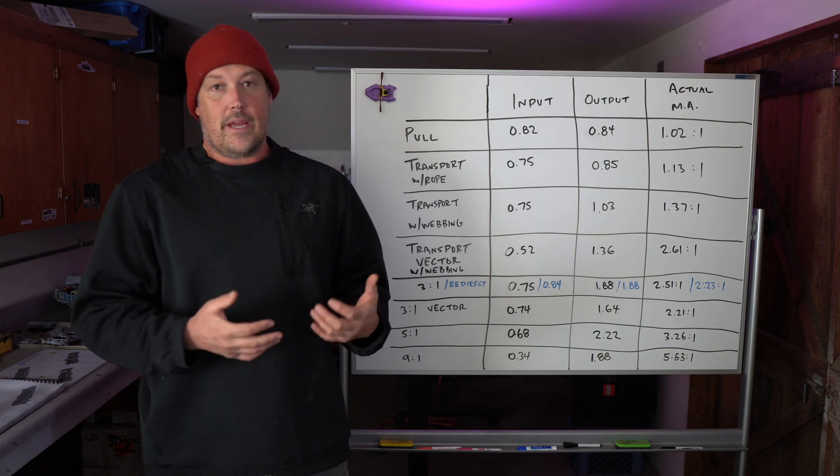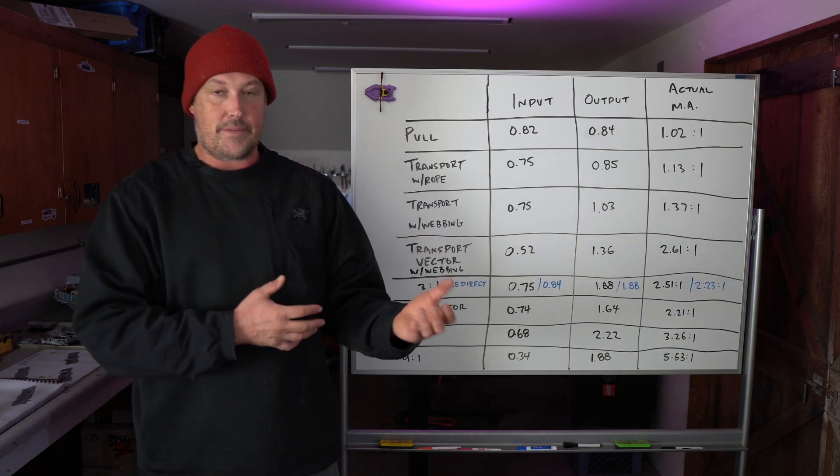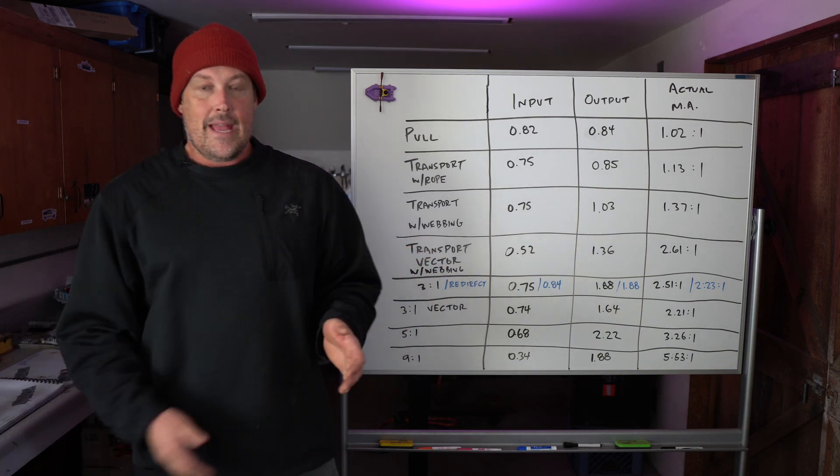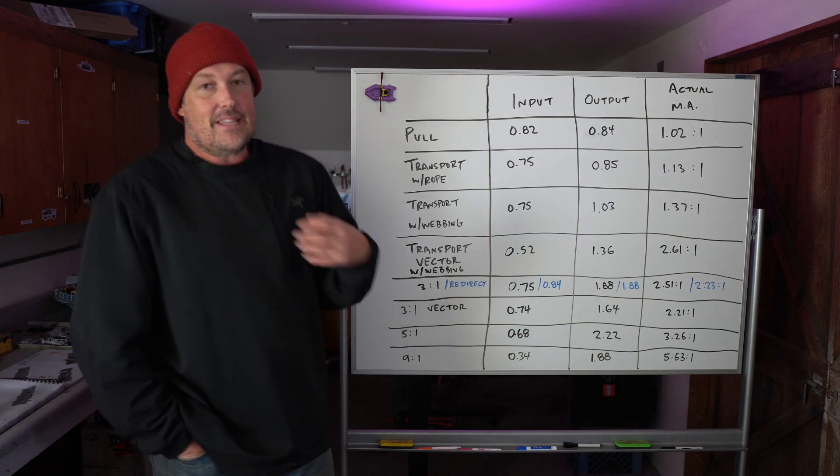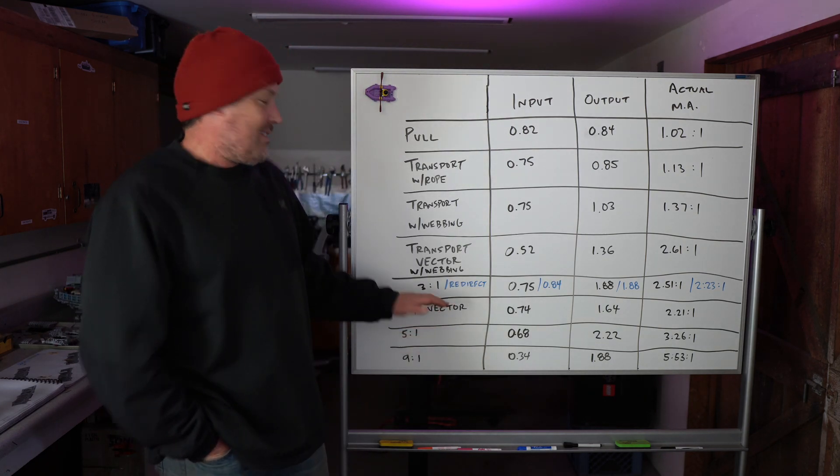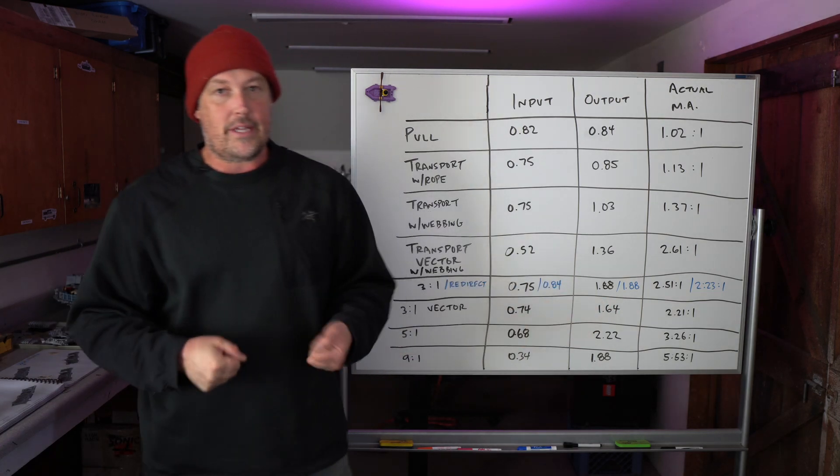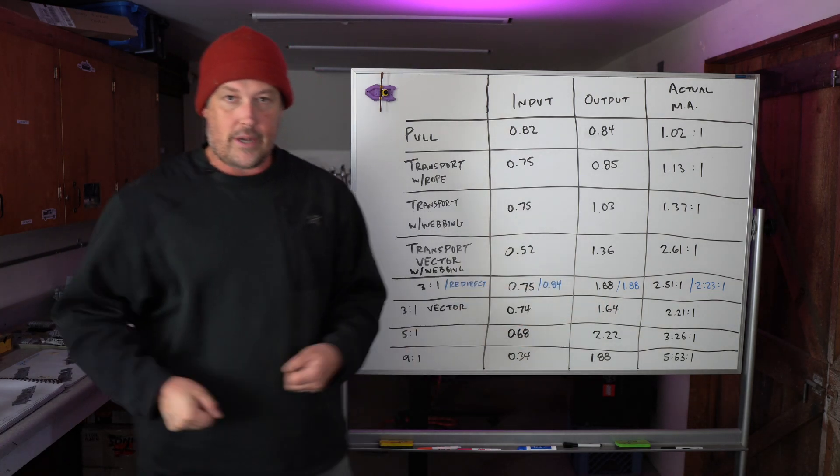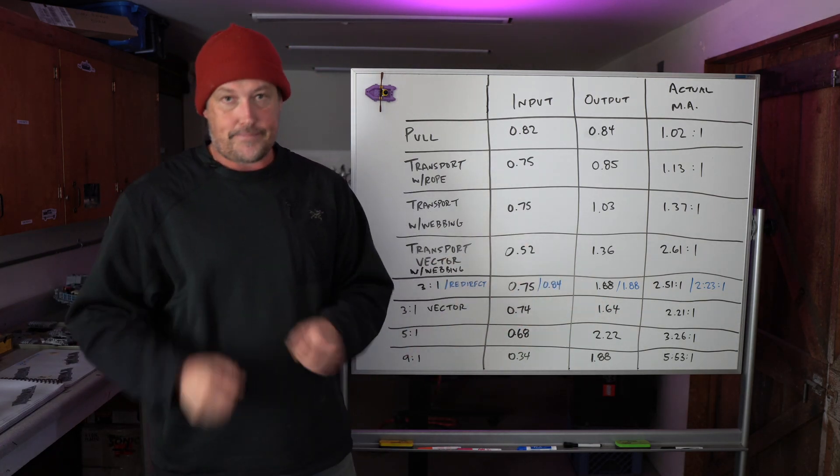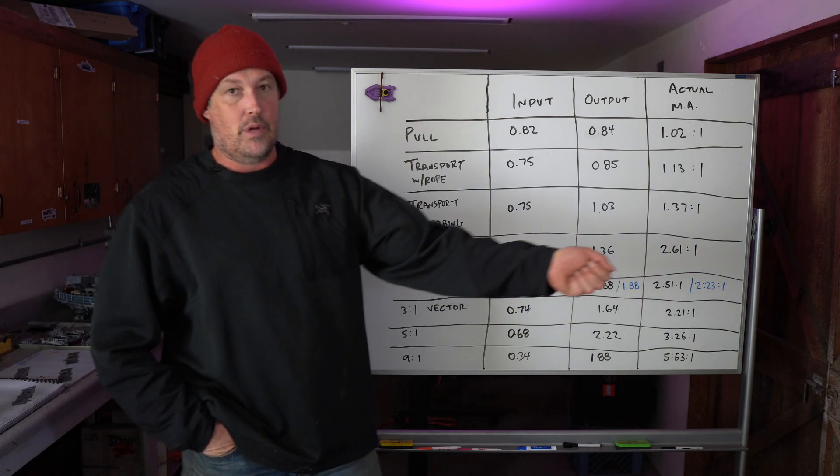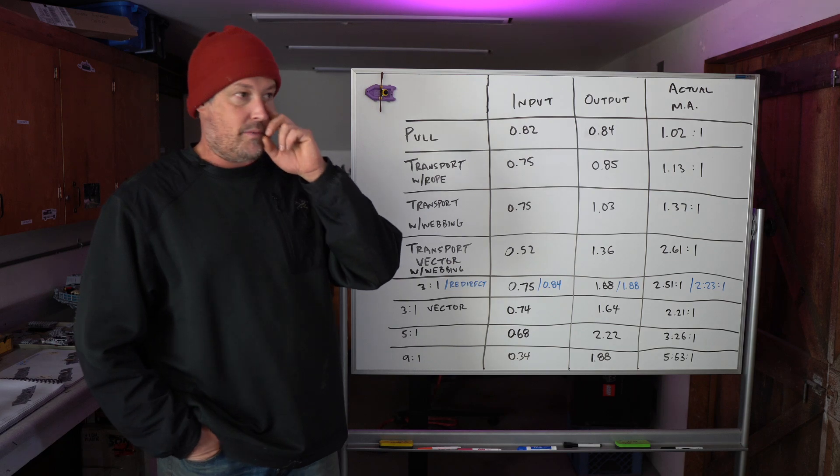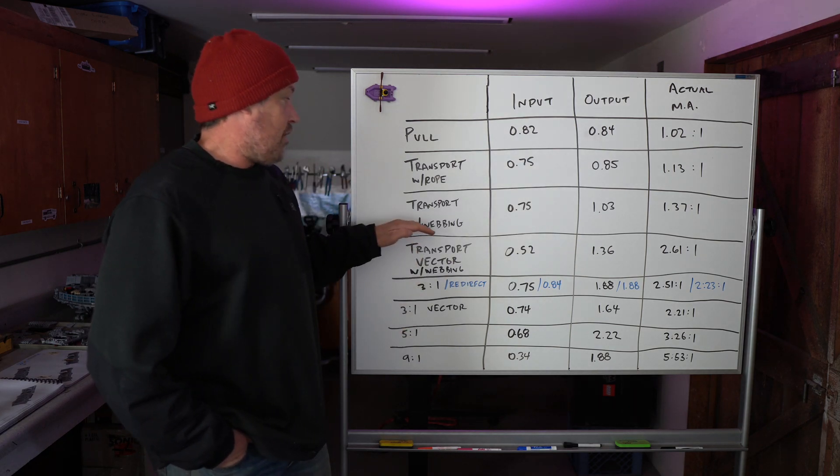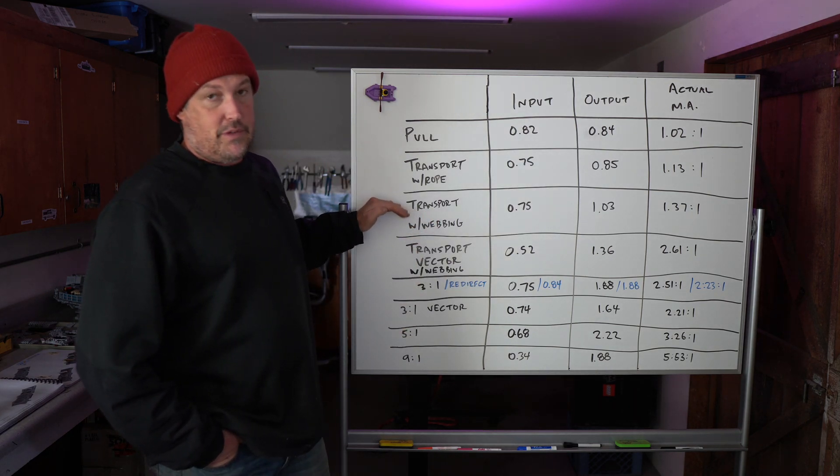And my takeaway, my general takeaway after setting all these things up today, just one after another, and just using them, oh man, the 3 to 1 is just, and this has been my opinion for a while, but the 3 to 1 just is nice. It just ratchets. You pull on it, you capture progress. You pull on it, you capture progress. You can keep pulling. Some of these other things, like the vector pull, you pull and get some force, but you have to give it back. You can't really capture progress as well.